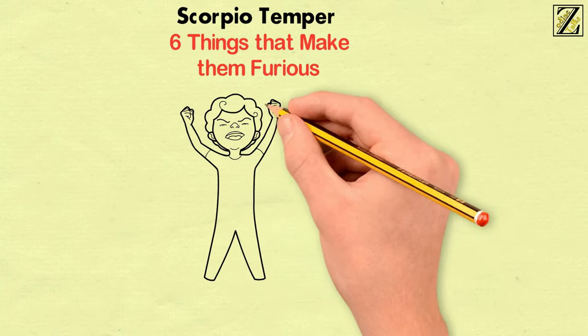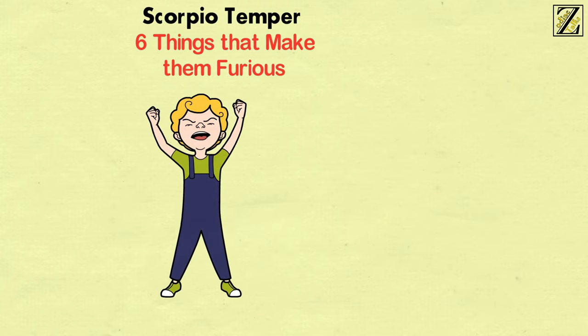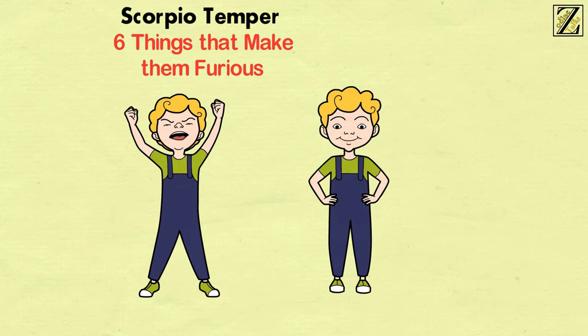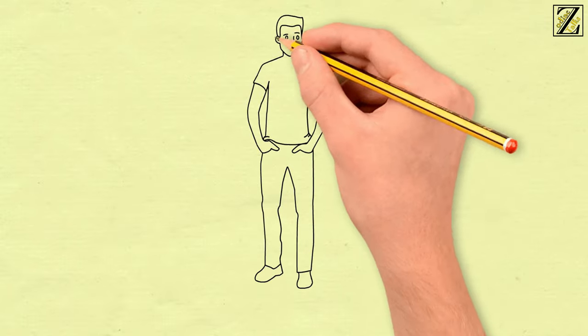Scorpios are hot-tempered, but their hot-headedness is not explosive. Even in their bad temper, they look composed from the outside. You just can't see the boiling blood inside them. Generally, they have extreme patience.